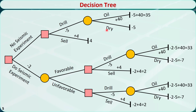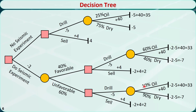Now let's put the probabilities on specific outcome branches. If they drill without the seismic experiment, the probability of finding oil is 25% and the probability of being dry is 75%. If the company does the seismic experiment, there's a 40% chance the result will be favorable and 60% chance it will be unfavorable. If it's favorable and the company decides to drill, the probability of finding oil is 60% and the probability of being dry is 40%. If it's unfavorable and the company decides to drill, the probability of finding oil is 10% and the probability of being dry is 90%.